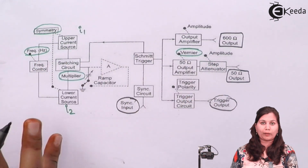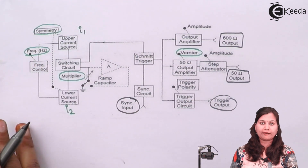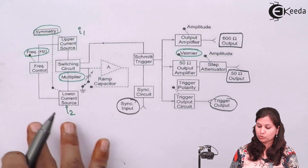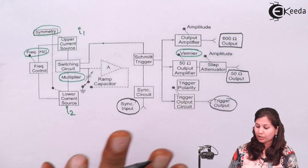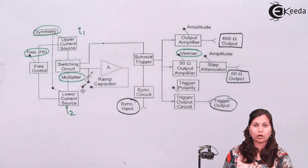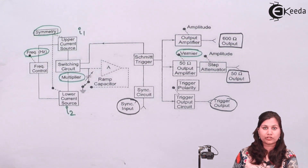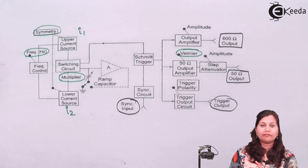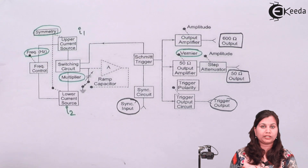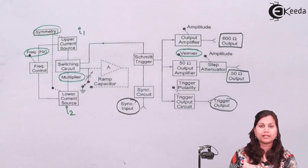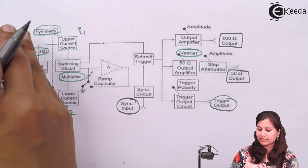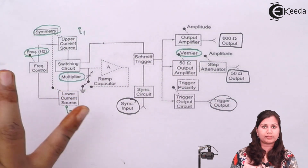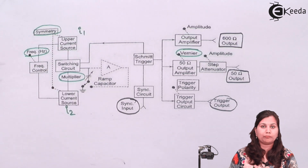The whole circuit is provided with an internal power supply which provides voltages to all stages of the instrument. This was the complete block diagram description of the pulse generator, and we have seen its working with the help of this block diagram — how a pulse is generated by the generating loop and what the functions of the other blocks are.